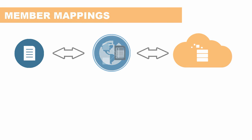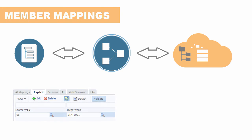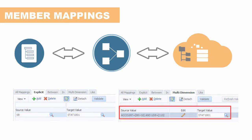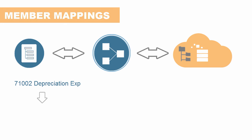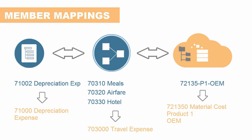Next, you create metadata mappings for each location to map source dimension members to their corresponding target application dimension members. Mappings can be anything from simple string replacements to powerful transformation logic. For example, in the chart of accounts, you can map a single source account to a single target account. If you want to consolidate accounts, you can map multiple source accounts to a single target account. You can also take a GL account code that contains multi-dimensional information and map it to discrete dimensions in your target. You can perform similar mappings for any of your source and target dimensions.